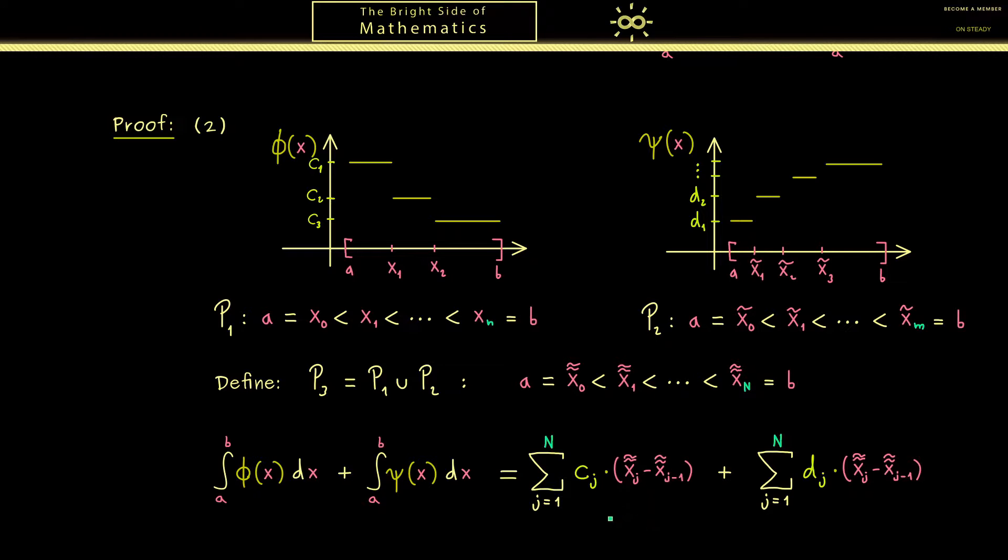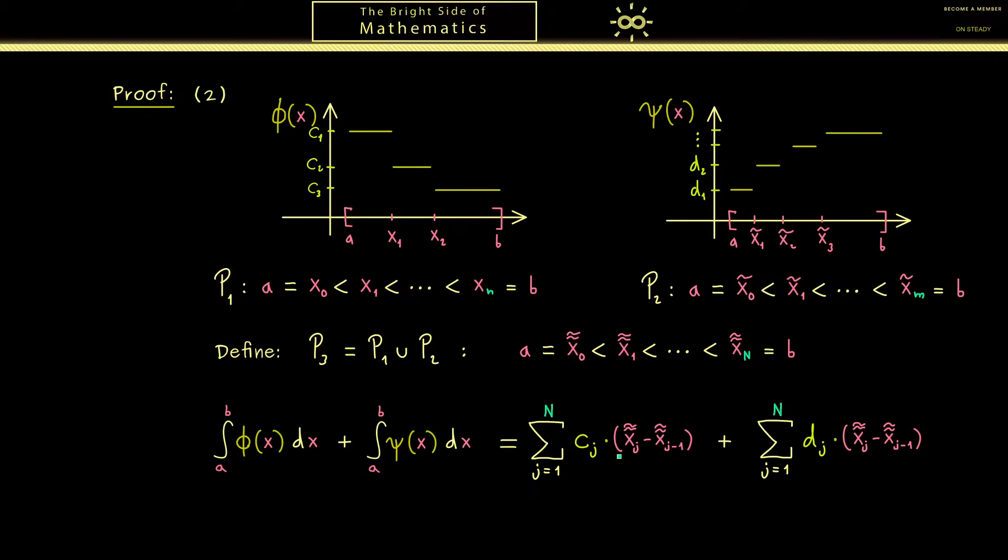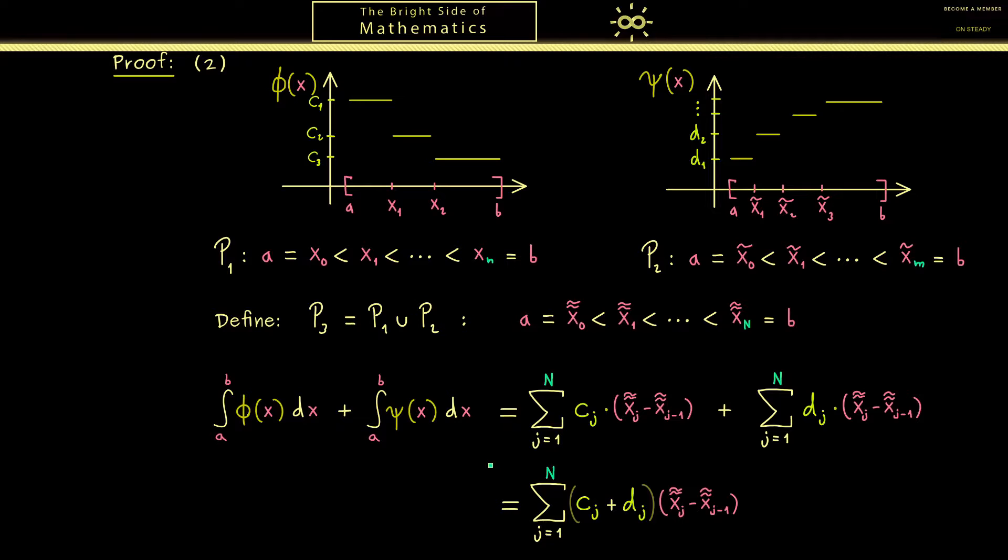Now the important step here is that now we are able to put the sums together. So we can write the whole thing just with one sum. This works because here x tilde tilde is the same in both sums. Therefore you can write it as cj plus dj times this difference. However now here you see we add the values of the functions. And indeed in general if we do this for each point on the x axis we get the sum of the two functions.